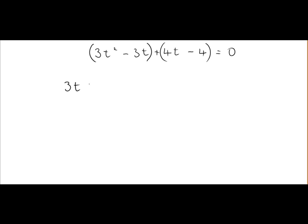So it's 3t by 3t squared divided by the common factor 3t. The common factor here is plus 4. So we'll divide everything by plus 4.